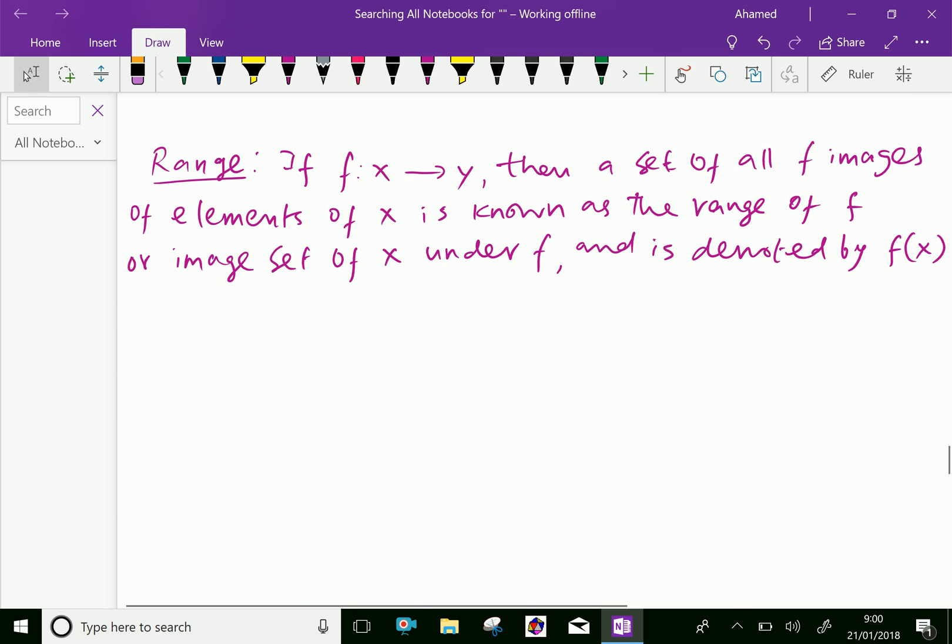Next one, range. If f: x → y, that is f(x) = y, then a set of all f images of elements of x is known as the range of f or image set of x under f and is denoted by f(x). We can say f(x) = {f(x) : x ∈ A} and which is called range, range of a function.